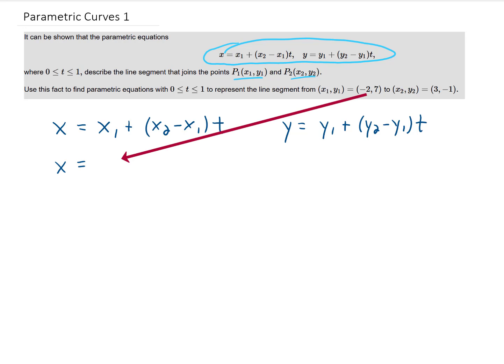Alright, we're going to replace x1 with negative 2, and we're going to replace x2 with 3. We're going to replace y1 with 7, and we're going to replace y2 with negative 1.